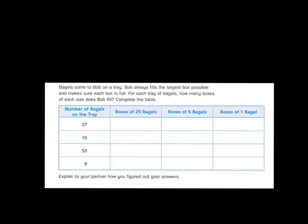Once you figure this out, you'll discuss with your partner how you got your answer. This is a preview of what you're going to be doing in class — we're going to spend a couple of days on this lesson. You'll do the activity, discuss with your partners, I'll collect your papers, look at all of your responses, and pick out the best ones, the worst ones, and the ones in the middle, and then we're going to try to figure out how we can make those better.